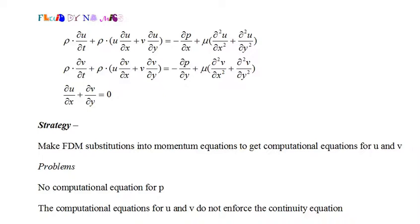However, the fluid state is defined by the values of u, v, and p — the fluid pressure — and we don't have an equation for fluid pressure. And while we use the continuity equation several times in the derivation of the momentum equations, we don't have a way to enforce the continuity equation when calculating u and v. So, what to do?